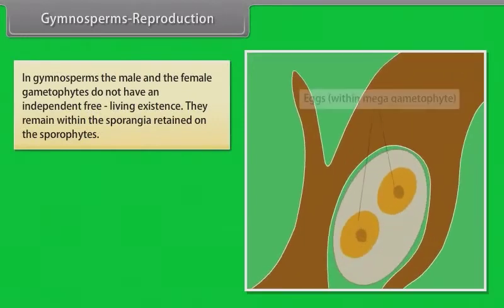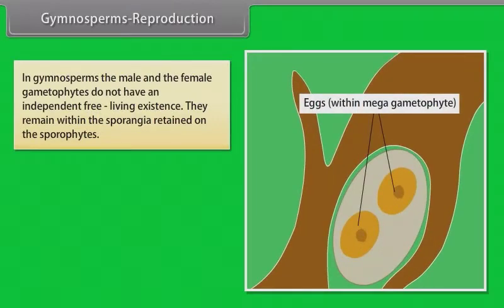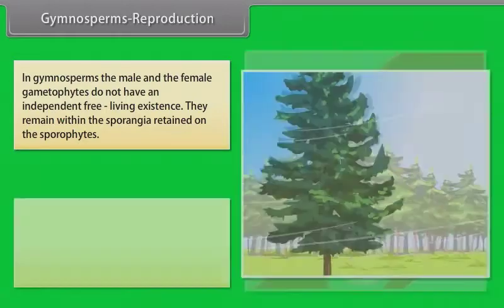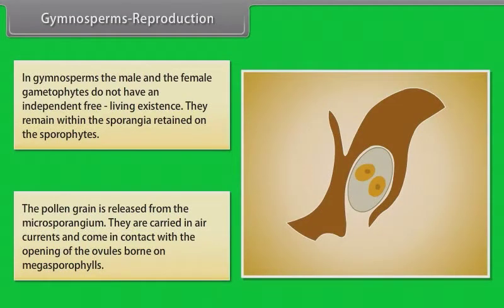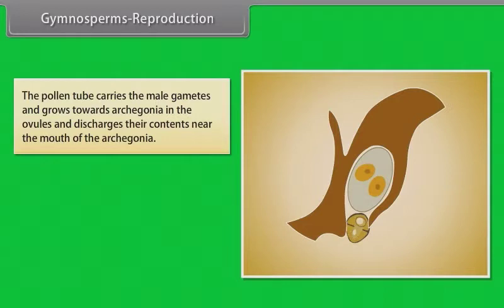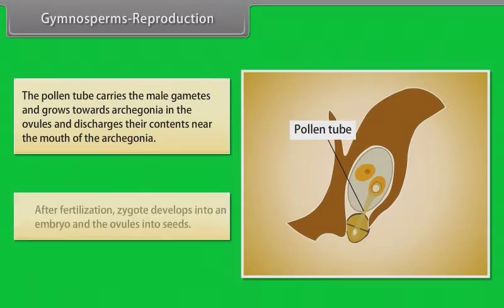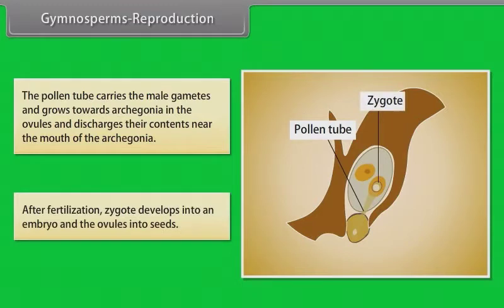In gymnosperms, the male and the female gametophytes do not have an independent free-living existence — they remain within the sporangia retained on the sporophytes. The pollen grain is released from the microsporangium, carried in air currents and comes in contact with the opening of the ovules borne on megasporophylls. The pollen tube carries the male gametes and grows towards the archegonia in the ovules and discharges its contents near the mouth of the archegonia. After fertilization, the zygote develops into an embryo and the ovules into seeds.